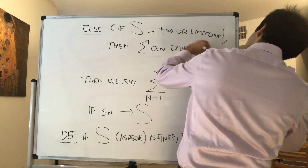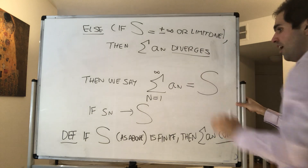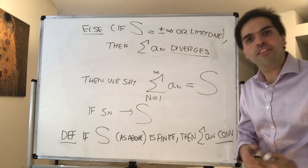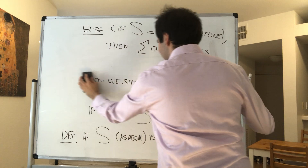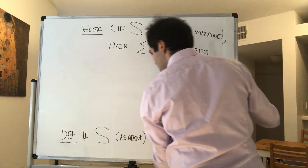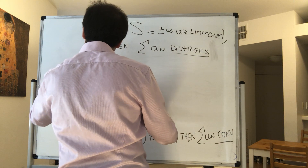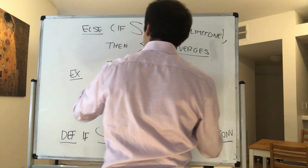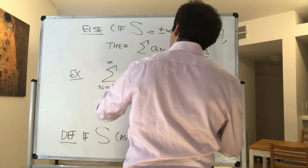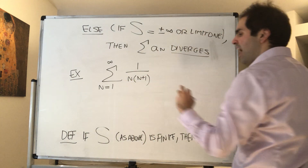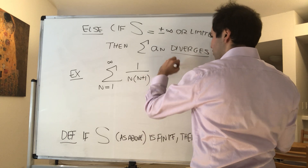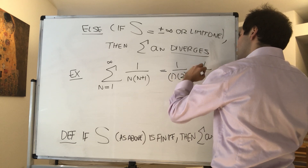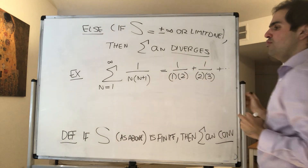Let me give you another example of a convergent series. Consider the sum from 1 to infinity of 1 over n times n plus 1. Let's find the value of that series, if it exists. This is 1 over 1 times 2, plus 1 over 2 times 3, plus 1 over 3 times 4, et cetera.